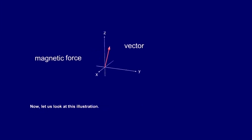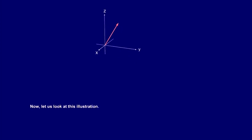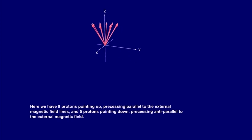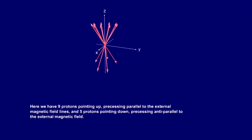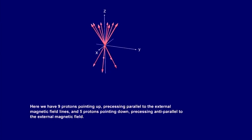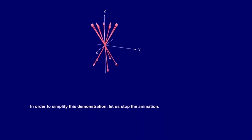Now let's look at this illustration. Here we have nine protons pointing up, precessing parallel to the external magnetic field lines, and five protons pointing down, precessing anti-parallel to the external magnetic field.